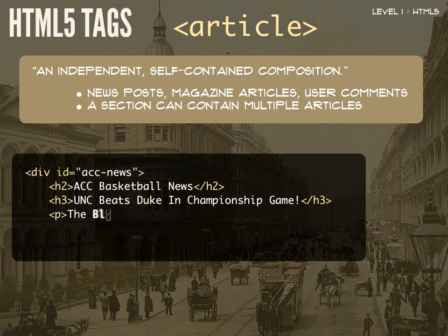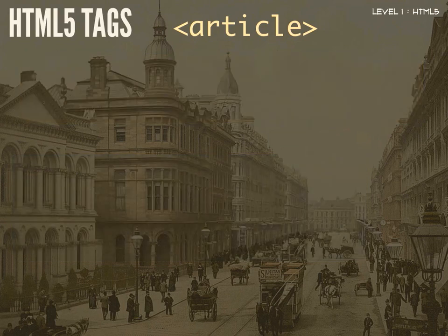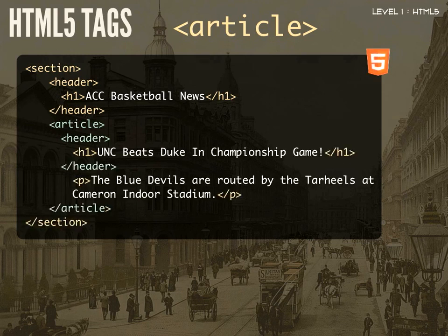So let's look at our example again — our div ID ACC News with our title and paragraph copy. When we changed it to HTML5, we added our section tags and our header tags. In this case, we've also added article tags as well. So now we can group our content — UNC beats Duke in the championship game — and our paragraph content within that article. Notice also that we've included more header tags; the header for this particular article is UNC beats Duke. So now we have two sections of header tags within this entire section element, and that's perfectly okay — perfectly semantic.